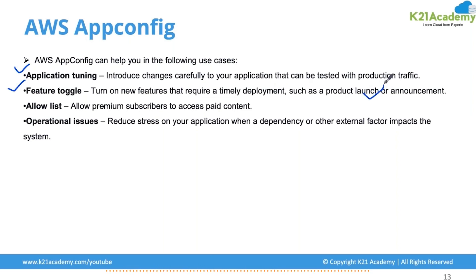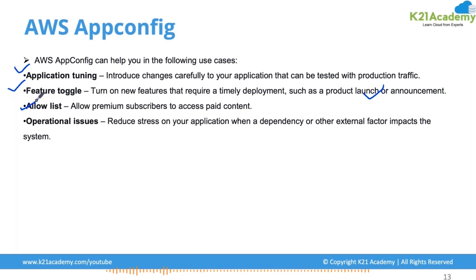Feature toggle: turn on new features that require timely deployment, such as a product launch or announcement. You can turn on new features on a periodic basis as needed. You can also use an allow list to let premium subscribers access paid content — for example, like Netflix, where only paid subscribers can access certain content. Similarly, in other applications like Disney+ or any other platform, you can allow access to users only if they have paid, using the allow list feature in App Config.